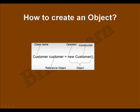For the particular class we are going to create an object. Here, the first 'customer' indicates the class name and the second 'customer' indicates the reference object. 'new' is the operator in Java, and 'customer' followed by parenthesis is a constructor. You can identify a constructor because the constructor name and the class name are always the same. The 'new' followed by the constructor is called an object, and this object is assigned to the reference object.